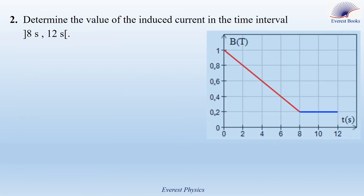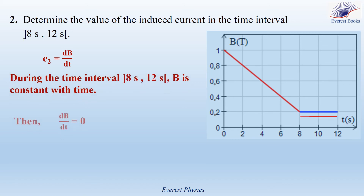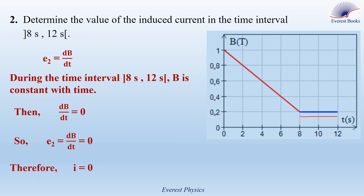Question 2. Determine the value of the induced current in the time interval 8 to 12 seconds. Using the relation E = dB/dt derived in part 1, the graph shows that B is constant between 8 and 12 seconds, so dB/dt = 0, therefore E = 0. When there is no induced electromotive force, there is no current in the circuit.